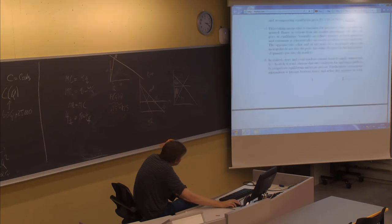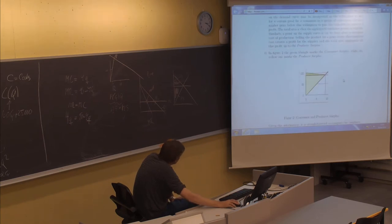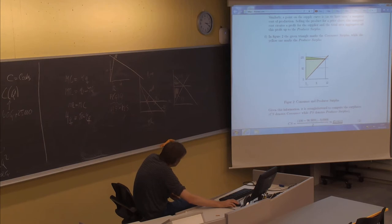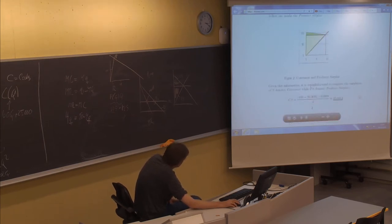In figure 2, the green triangle marks the consumer surplus, while the yellow one marks the producer surplus. Given this information, it's straightforward to compute the surpluses. CS denotes consumer surplus, PS denotes producer surplus. CS is found by finding this distance here. This point we already know is 90.9091, which we found previously as the market price. So 100 minus 90.9 produces that distance, then we multiply it with 9.0909 to be precise. To find the area of a triangle, we take the height, multiply it with the baseline, and divide by 2. That turns out to be 45 point something.